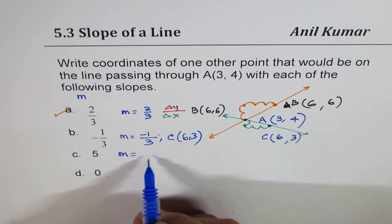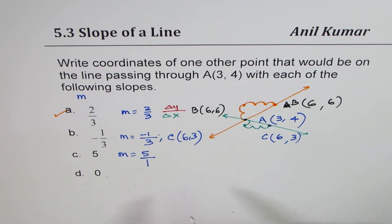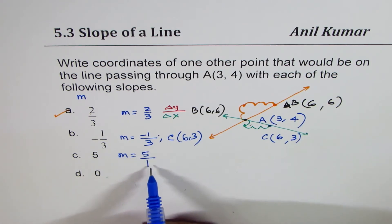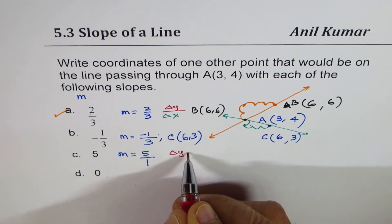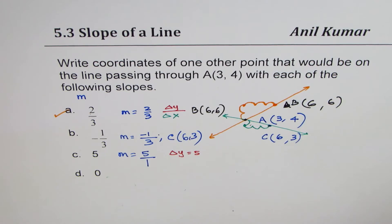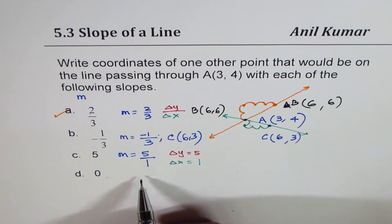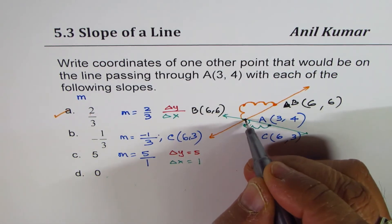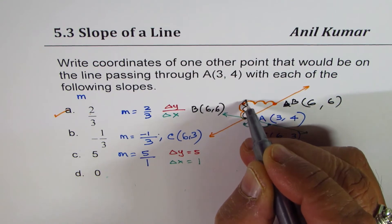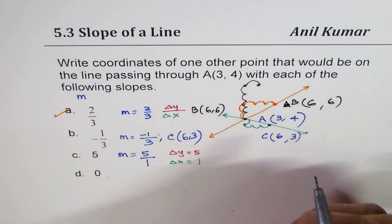Now the slope M is given as 5. The value 5 really means you could write it as 5/1 — so for a change of 5 in y, x changes by only 1 unit. Change in y is 5 and change in x is 1; the denominator of 1 is assumed. So we go 5 units up from point A: 1, 2, 3, 4, 5 — and 1 unit to the right.